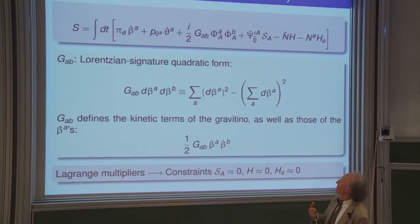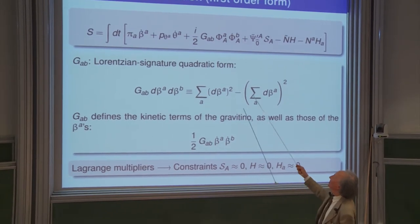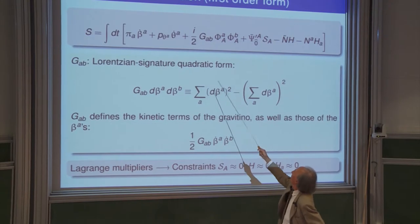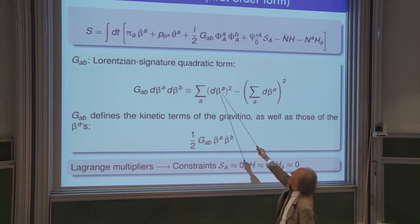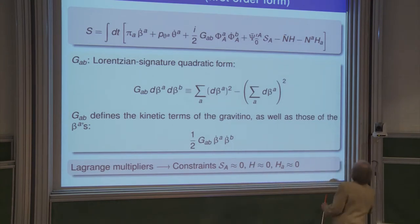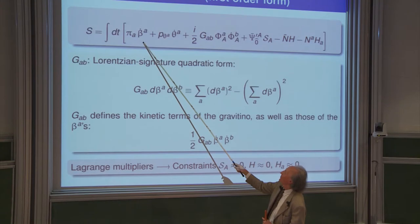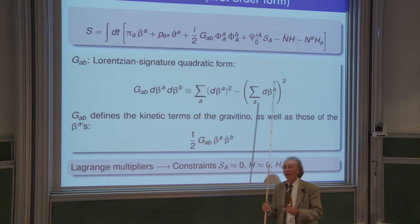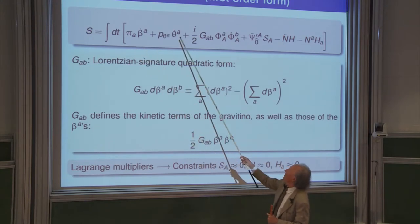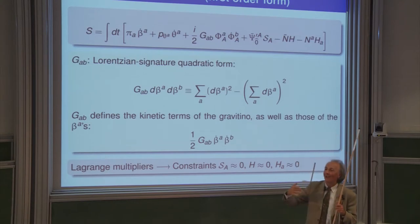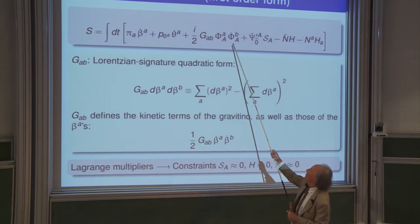You take the action of supergravity, substitute this geometry into it, and go to the Hamiltonian version. You find an action of Hamiltonian form: conjugate momenta times time derivatives of coordinates. The three beta components parameterize the deformed shape of the geometry, with conjugate momenta called pi. The Euler angles (phi) represent the orientation of the quadratic metric, with their conjugate momenta. There are also fermionic kinetic terms of the form phi-phi-dot.